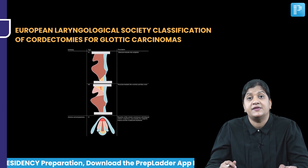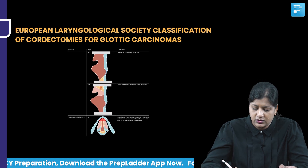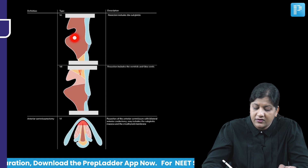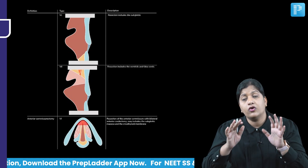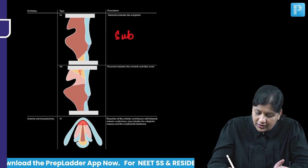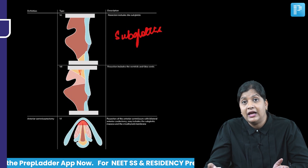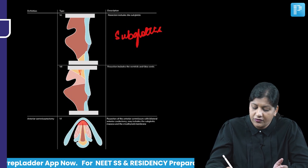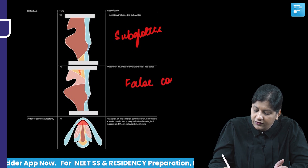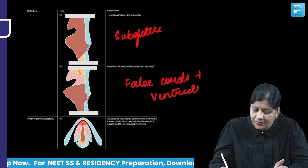What is 5c? 5c is a procedure where you resect the subglottis as well. At the level of the vocal cords, you remove down to the level of the subglottis — not just the glottis, you are going down as well. That is called 5c, the subglottic extension. What is 5d? In 5d, you go above and take off the false cords and the ventricle of the larynx. If you resect the false cords plus the ventricle of the larynx, it is 5d.